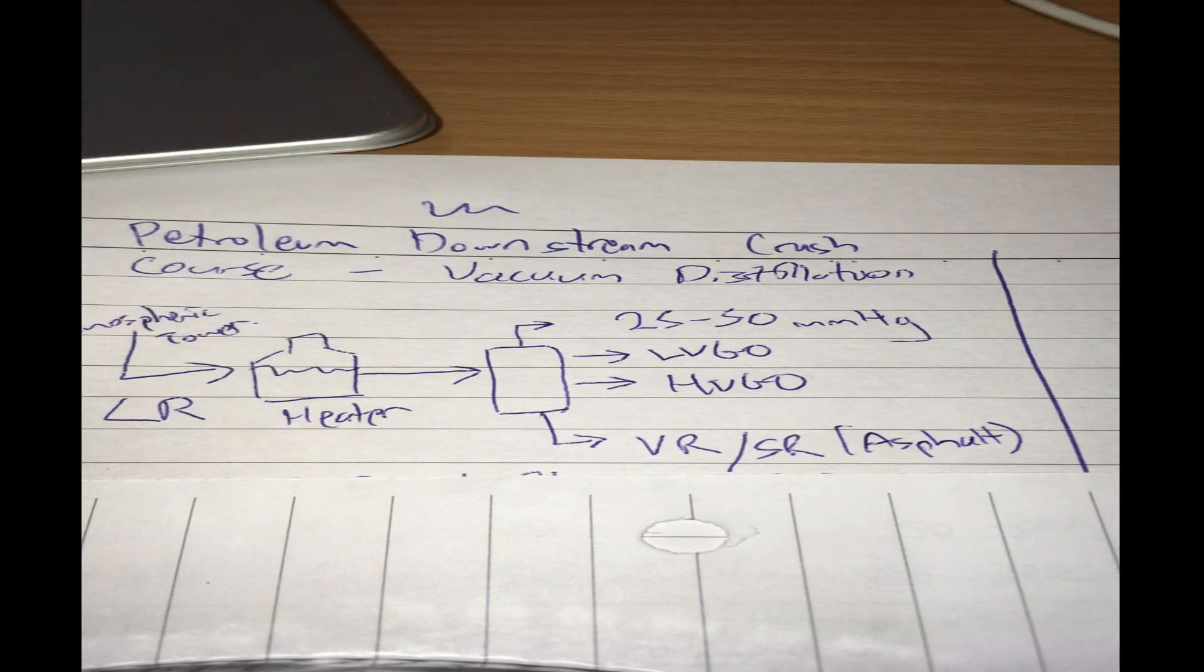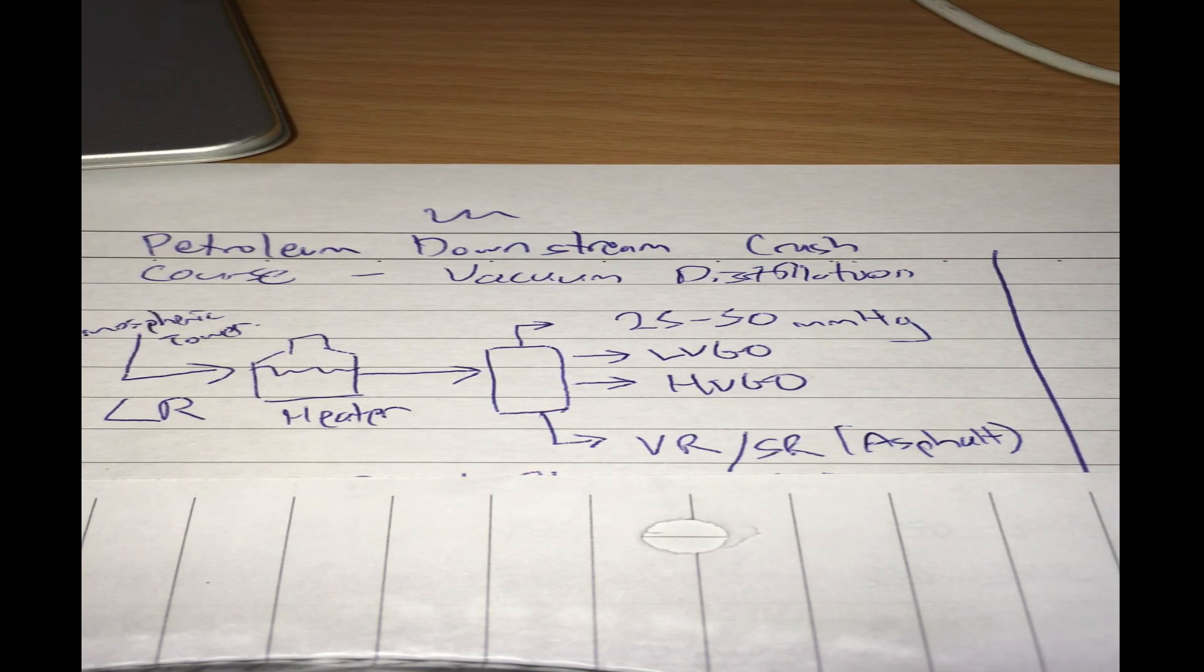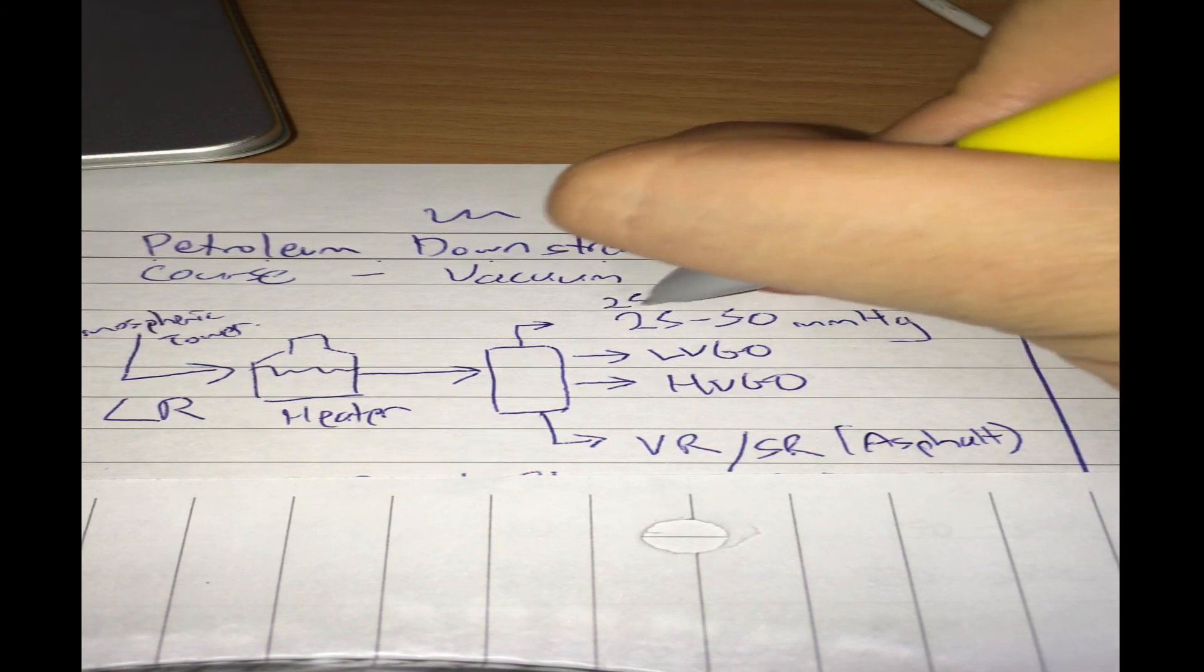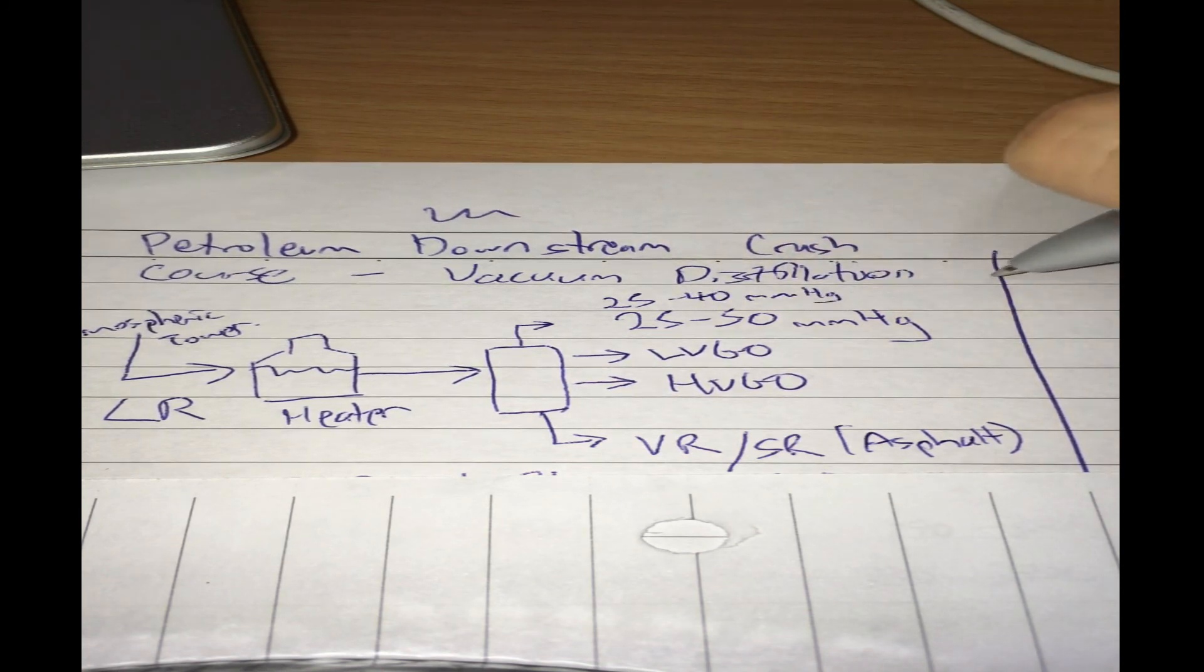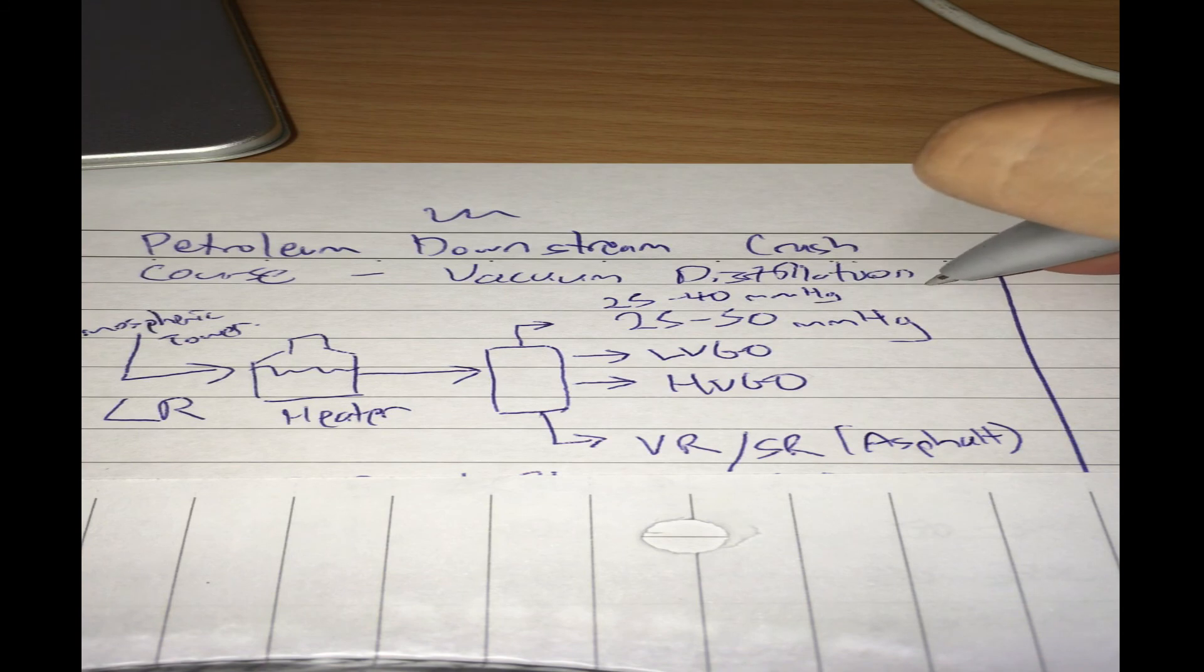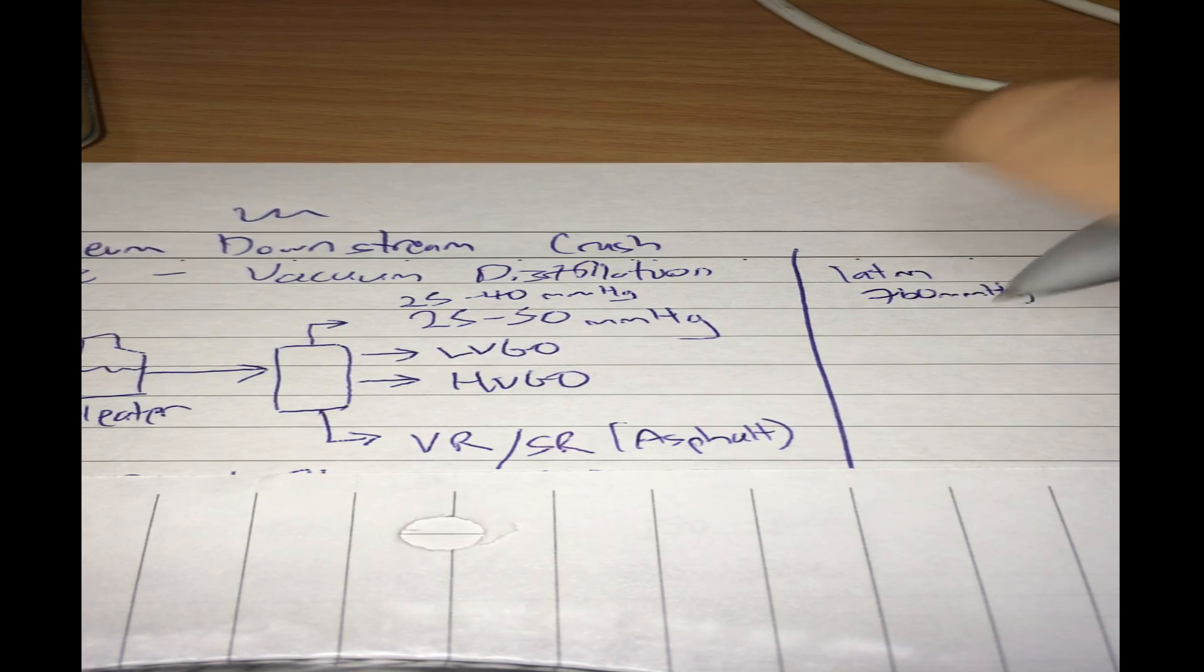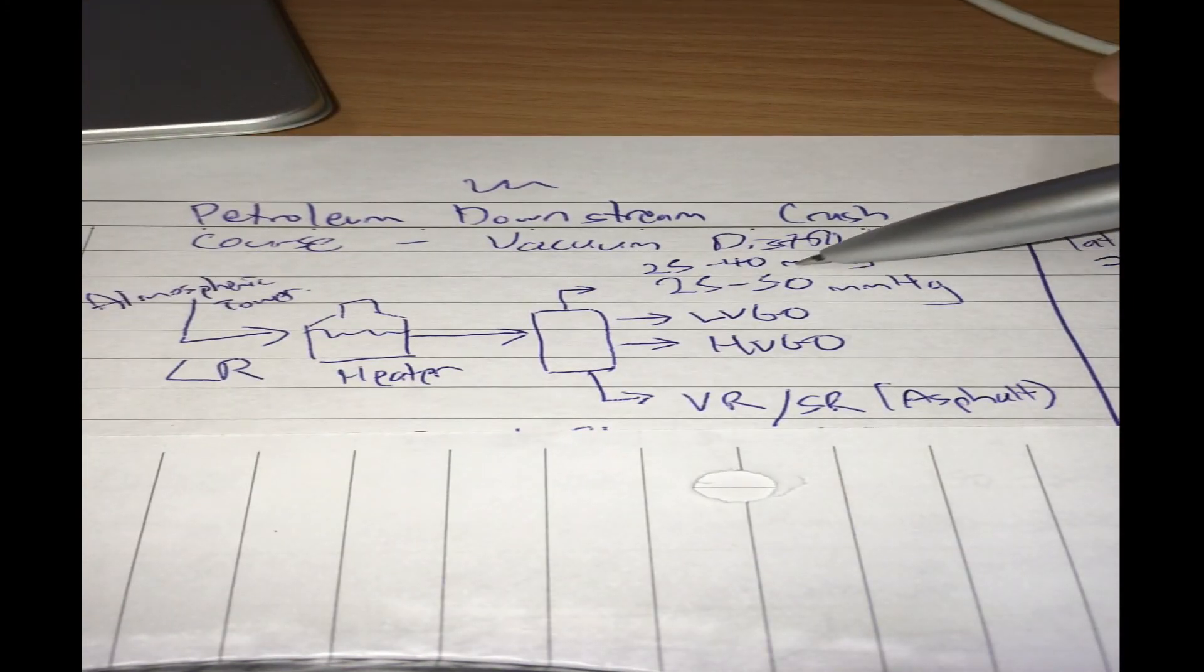What's the typical pressure? Sometimes it can be a heavy vacuum from 25 to 40 millimeters of mercury. This is a pressure measurement where one atmosphere of pressure is 760 millimeters mercury.